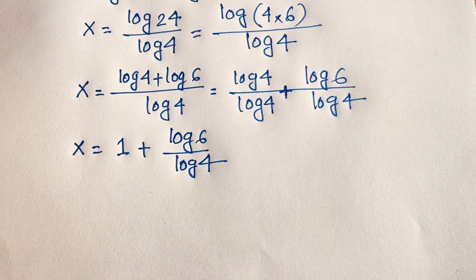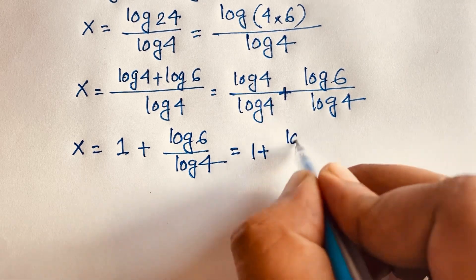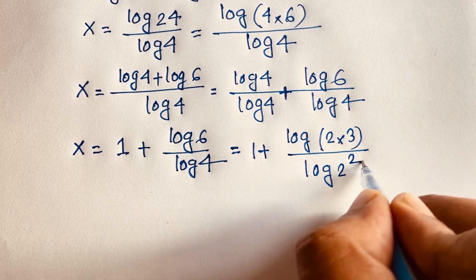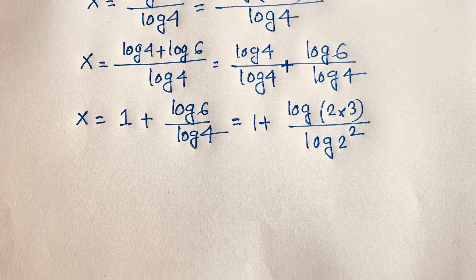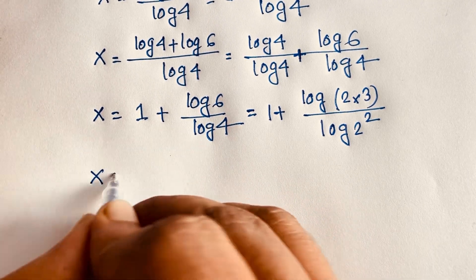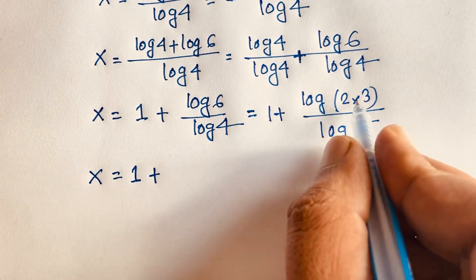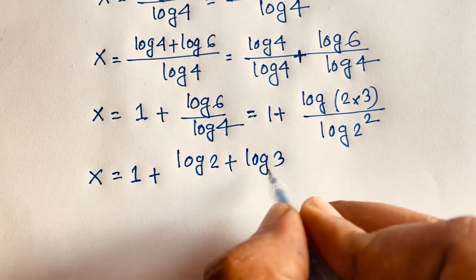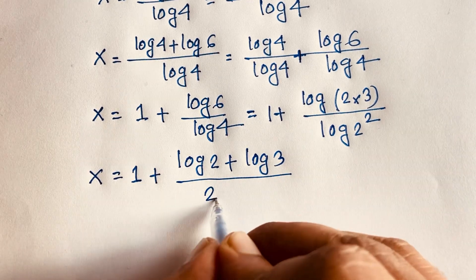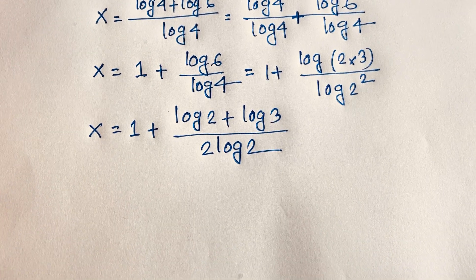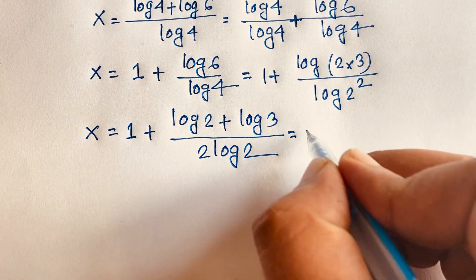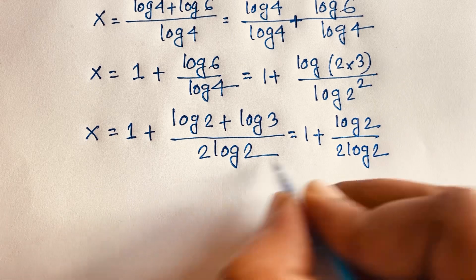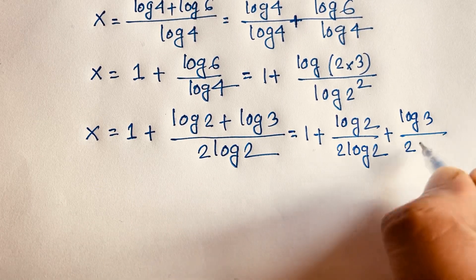Now at this moment, this value will be 1 plus log 6, where 6 is 2 times 3, over log 4, which equals log 2 to the power 2. So x is equal to 1 plus log 2 times 3, which by logarithm rules is log 2 plus log 3. And the exponent 2 moves in front, so the denominator becomes 2 log 2. This gives us 1 plus log 2 over 2 log 2 plus log 3 over 2 log 2.